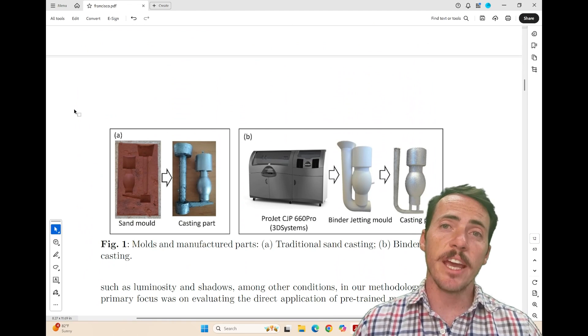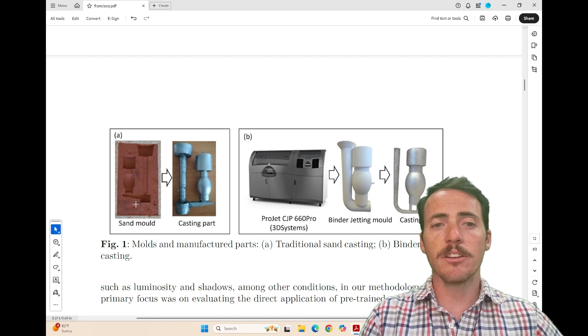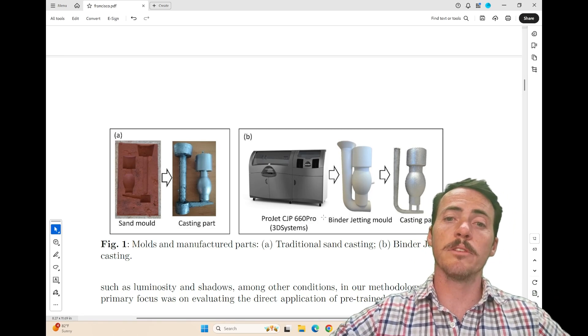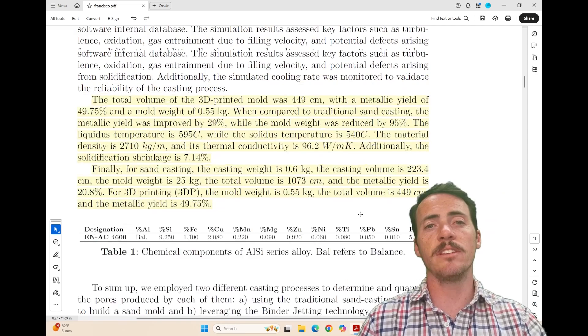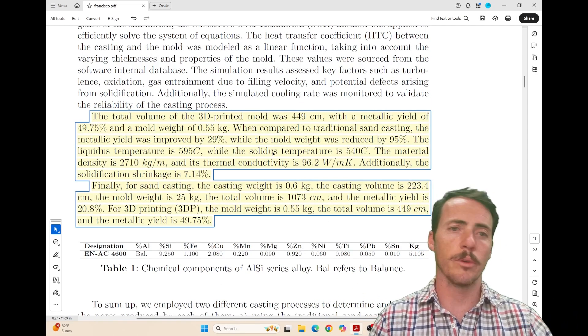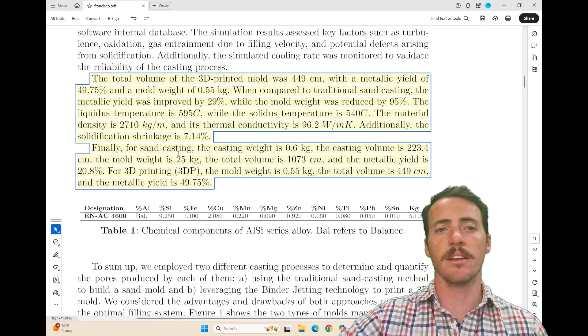When it comes to generating data for this model, they actually made materials. On the left, you see a sand mold and the cast part that came from it. And on the right, you see a binder jet system, which is able to binder jet print the mold and they were able to cast into it. They actually have details on the actual fabrication, which I appreciate, how they made them, what their yield was, what the metals were they used. So you can see that for both the 3D printed mold and the sand casted mold.